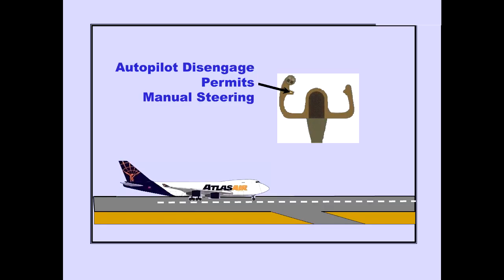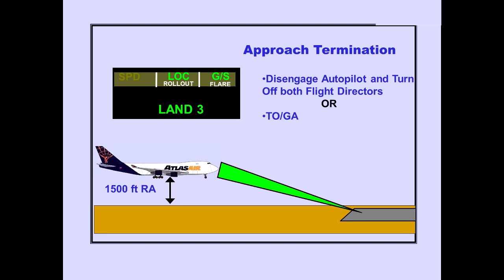After landing, disengaging the autopilot deactivates the rollout mode and permits manual nose wheel steering for taxi operation. After the localizer and glide slope have been captured, the approach can only be terminated by disengaging the autopilots and turning off both flight directors, or engaging the TOGA mode.